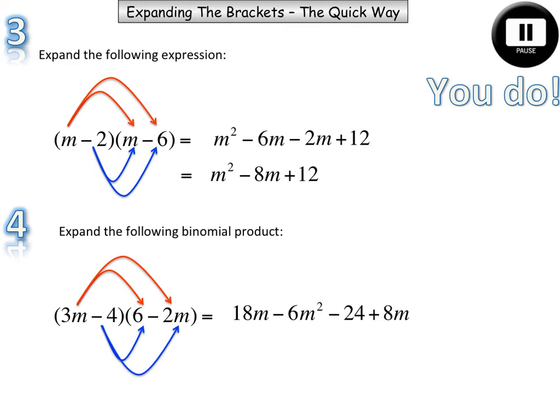So we can simplify this term and this term to give us 24m. Sorry, that's a 26m. And we have these two terms remaining. So 26m take away 6m squared. Take away 24. And there's our final answer.